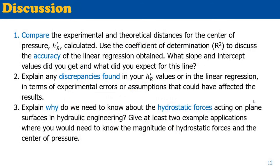In your discussion, compare the experimental and theoretical center of pressure distances. Use the coefficient of determination R² from the Excel trend line to assess accuracy. Also report the slope of the straight line and any intercept value — discuss whether the intercept is acceptable or unexpected. Explain any discrepancies found, such as why individual data points may be off.